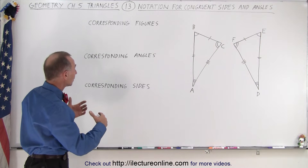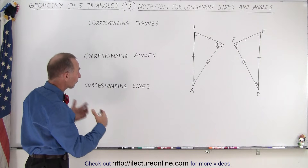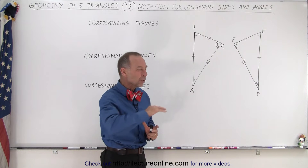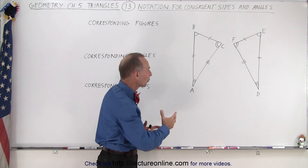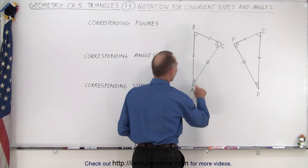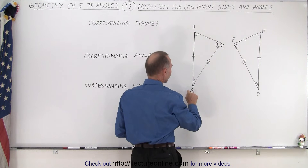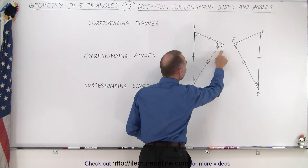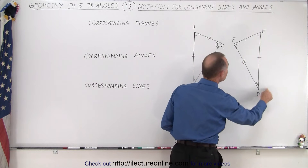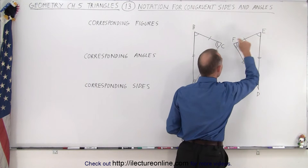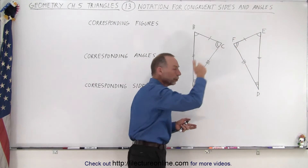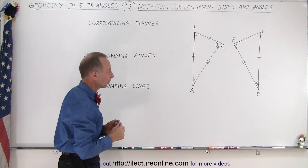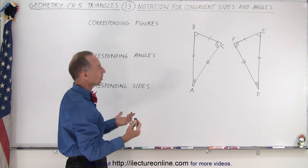So how do we write that the corresponding figures are congruent? We try to keep the same order in which we list the letters pointing to each of the corners. So here we can say that the triangle from A to B to C is congruent to the triangle from D to E to F. Notice that we move along the figure in the corresponding direction.